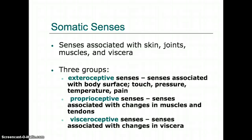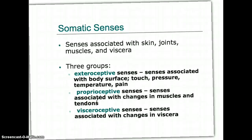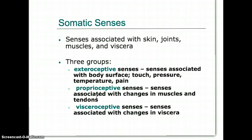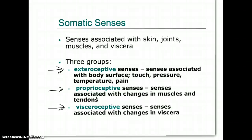In somatic senses, there are three different types of receptors. Exteroceptive receptors are located in the skin and sense touch, pressure, temperature, and pain. Proprioceptive receptors deal with changes in muscles and tendons — again, mechanoreceptors. Visceroceptive receptors are found in the organs and may include some pain receptors, dealing specifically with organ sensation.